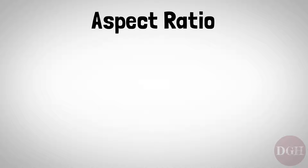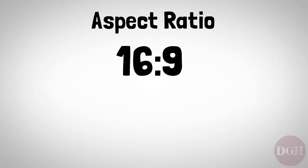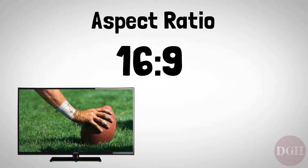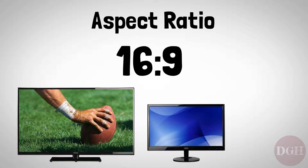Modern televisions are much wider than their 4x3 predecessors. They generally have an aspect ratio of 16x9, which is a very common aspect ratio today, found in TVs, computer displays, and even smartphone screens.